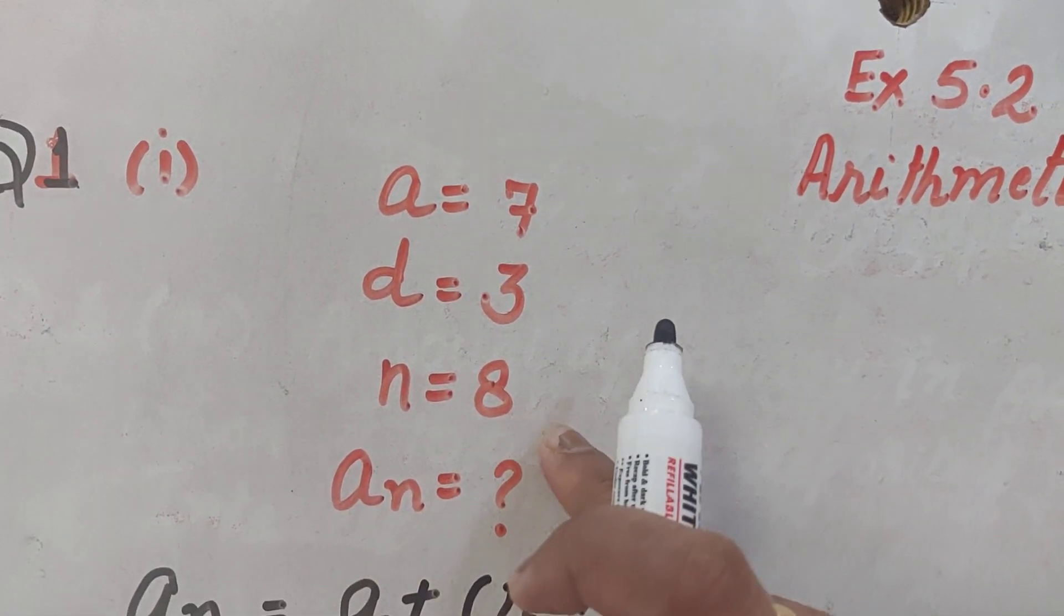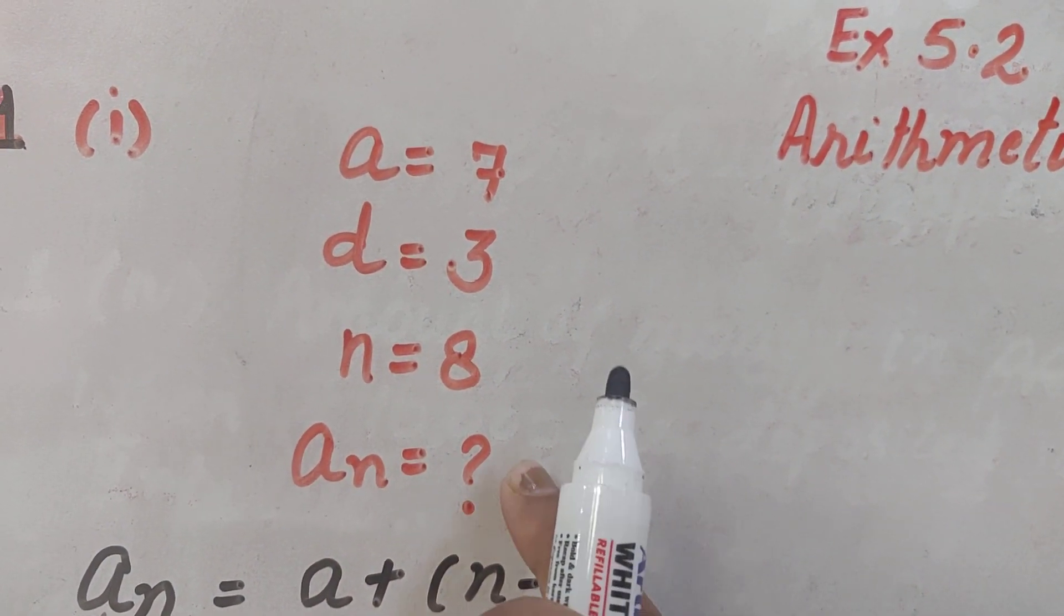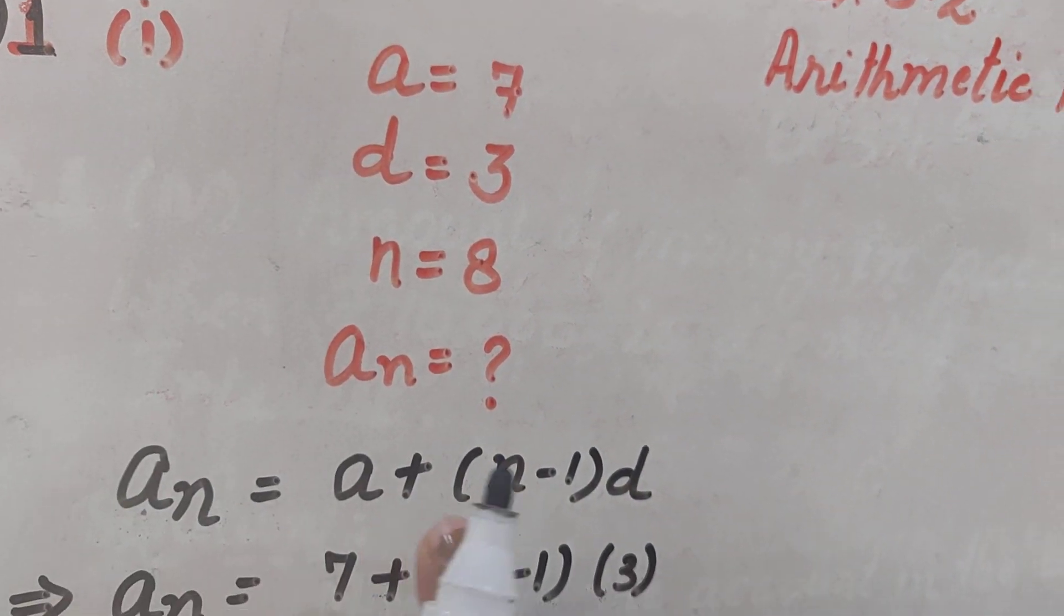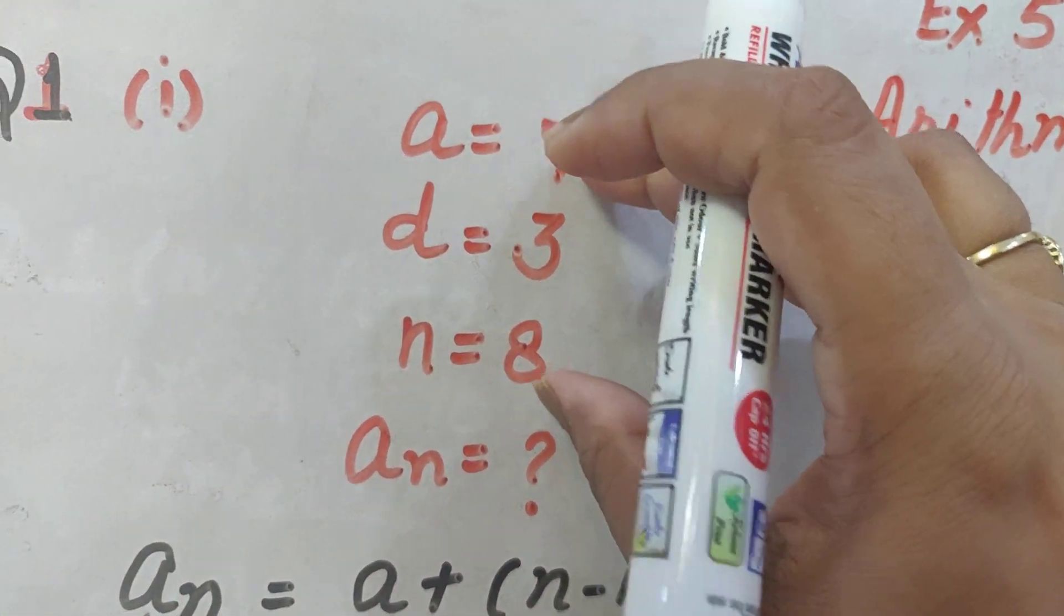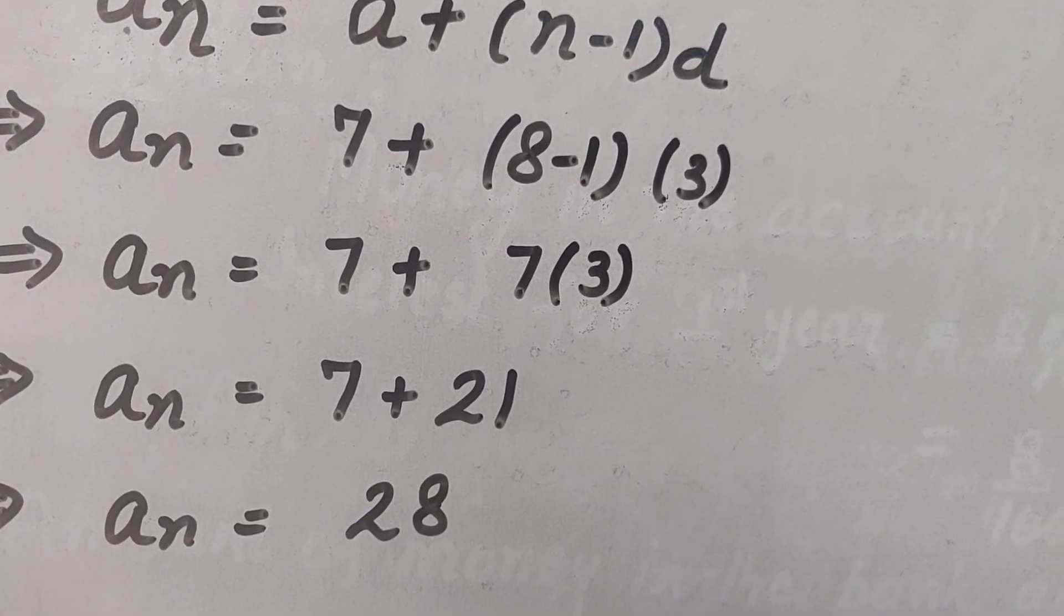A, D, N are given to you and you are supposed to find AN. This is for you a very simple question. You will straight away put the formula of AN and then you will put all these 3 values in the formula and you will get AN as 28.